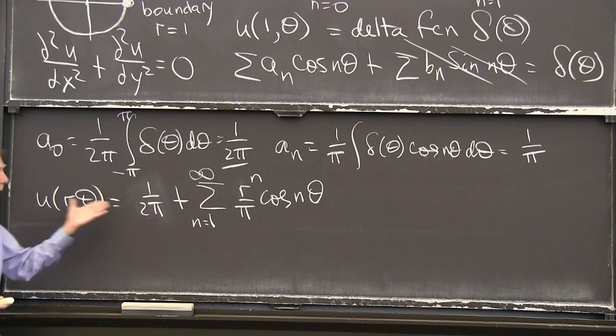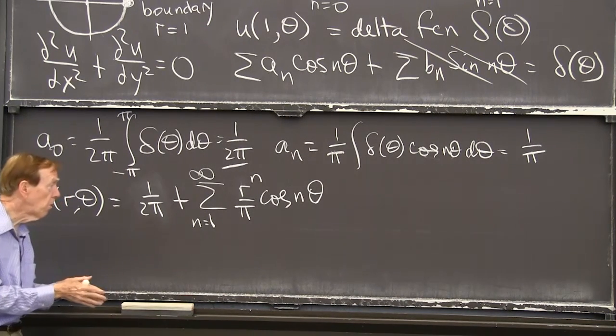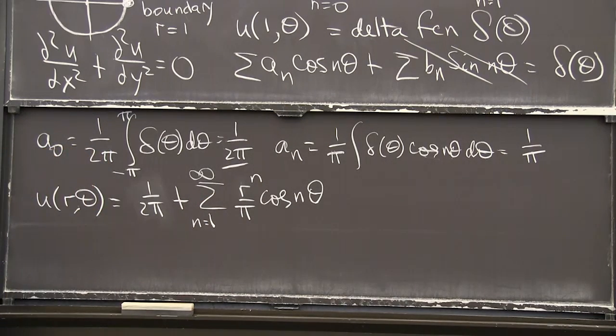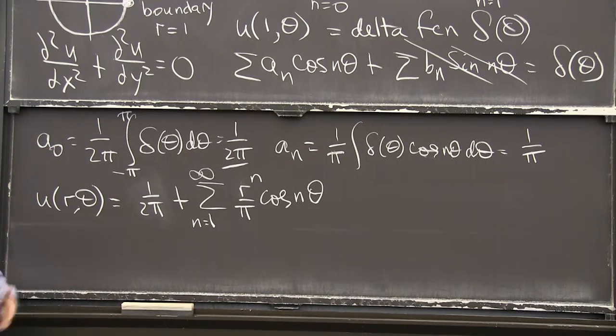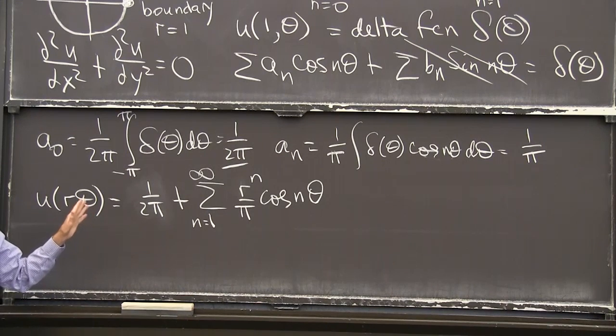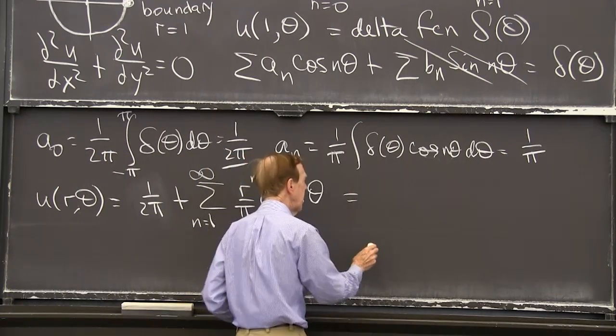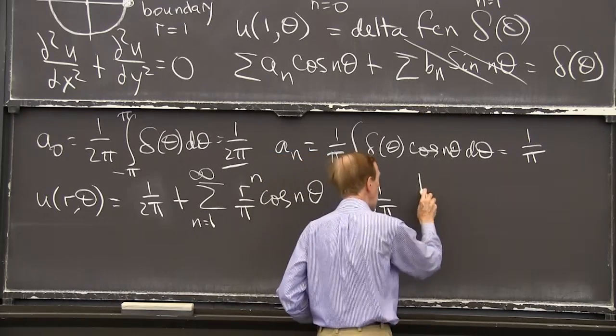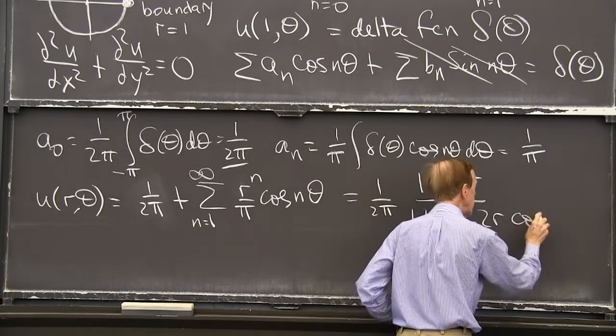When r is 1, we have the Fourier series for the delta function. That's the very exceptional function that's given on the boundary. As soon as r is less than 1, these r to the nth get small. And we have a series that adds up to a reasonable sum. And we can actually, it's possible to add up that series. It's a geometric series if you switch from cosines to exponentials. Because that's usually the good way to get good formulas.